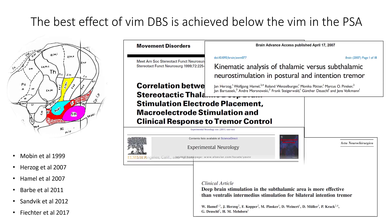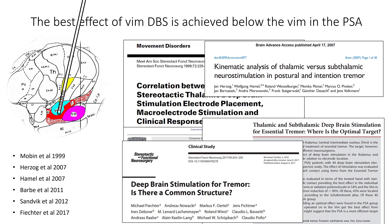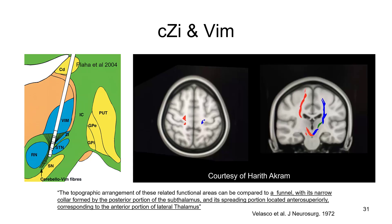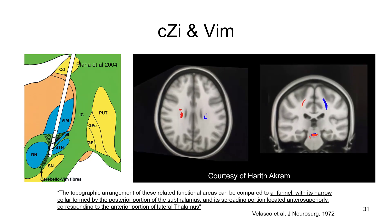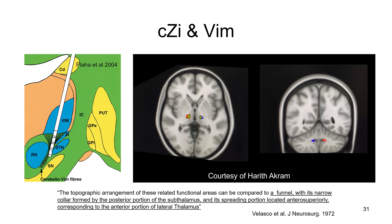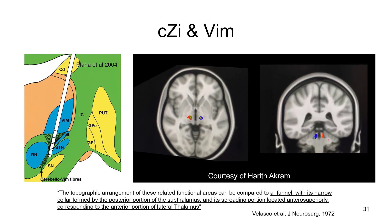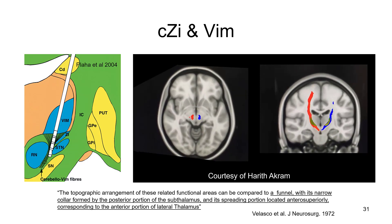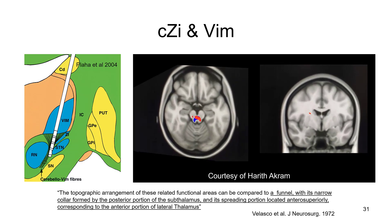It is easier and more natural to combine the PSA, or the zona inserta as it is also called, with the VIM, since even when only the VIM is targeted, many or even most patients have the best effect in the PSA. By simply advancing the electrode deeper down from the VIM, we will often end up fairly well placed in the PSA. In reality, these two targets might be seen more as different aspects of a continuum, since we are probably achieving the effect from stimulation of the cerebellar thalamic fibers at the level of the zona inserta or at the level of the VIM.